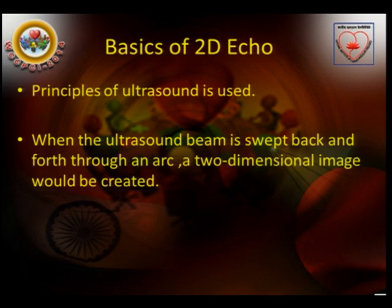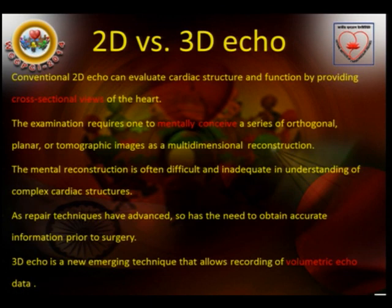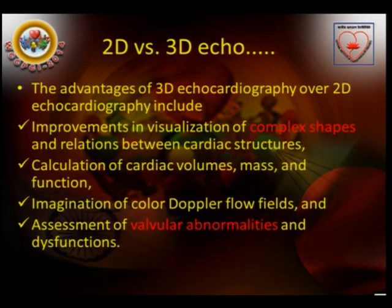In 2D echo, when the ultrasound beam is swept back and forth through an arc, a two-dimensional image is created. Conventional two-dimensional echo evaluates cardiac structure and function by providing cross-sectional views, and one has to mentally conceive a series of images as a multi-dimensional reconstruction — which is often difficult. 3D echo is a technique that allows recording of volumetric echo data. Advantages of 3D over 2D include improved visualization of complex shapes and relations between cardiac structures, calculation of cardiac volumes, mass and functions, imaging of color Doppler flow fields, and assessment of valvular abnormalities and dysfunctions.